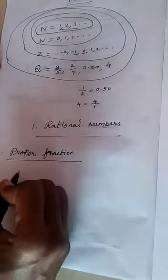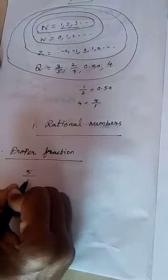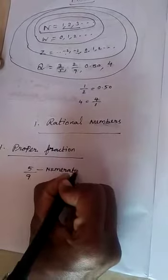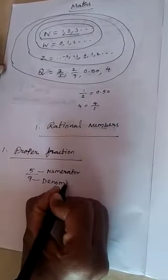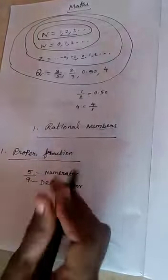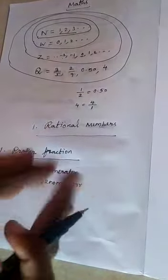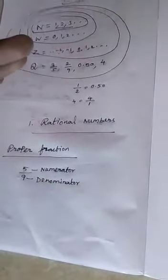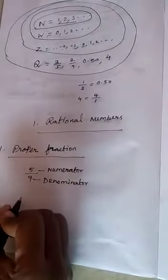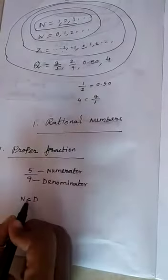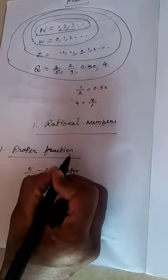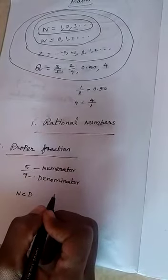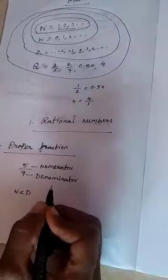Proper fraction — for example, 5 by 9. The upper part is the numerator; the lower part is the denominator. The numerator is the small value and the denominator is the big value. So numerator is lesser than denominator — this type of fraction is called a proper fraction. Proper fraction values are greater than 0 but lesser than 1.